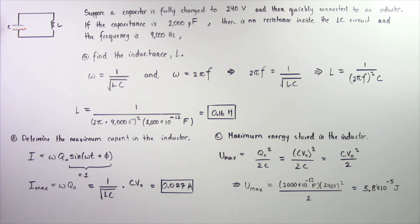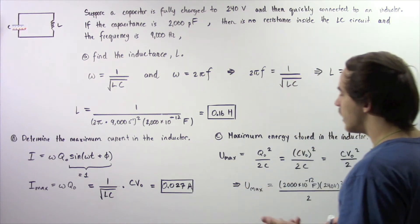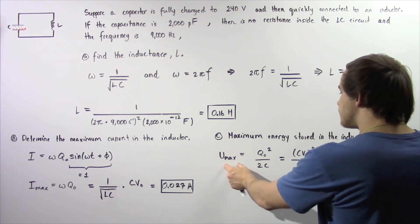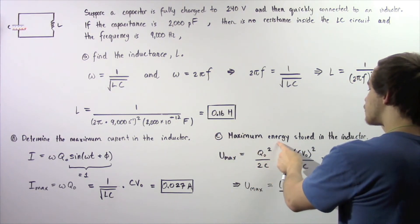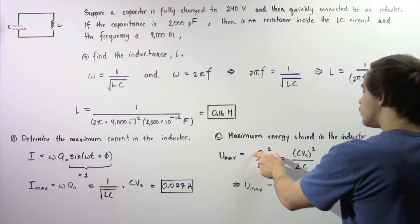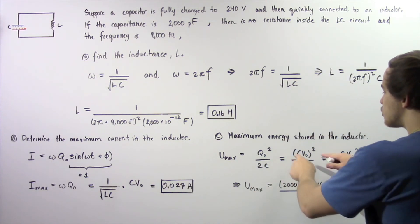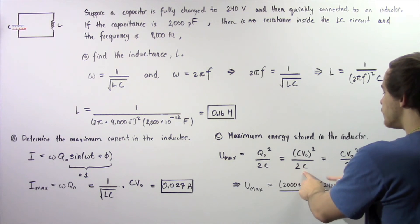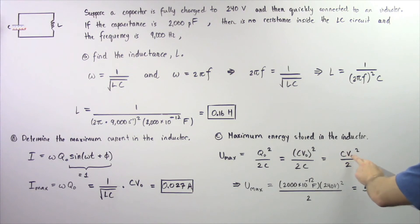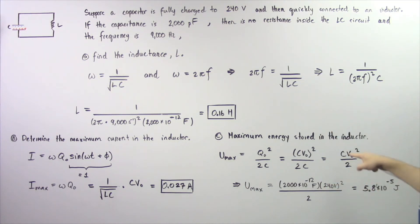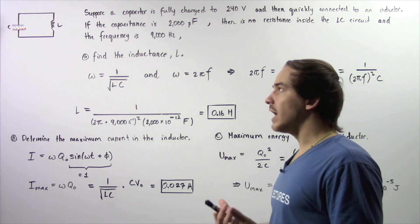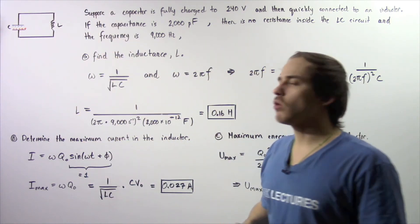Finally, let's move on to part C: find the maximum energy stored in the inductor. The maximum energy in the inductor is equal to Q naught squared divided by 2 times C. Since Q naught equals C times V naught, we square this and divide by 2C. One of the C's cancels, giving maximum U equal to C times V naught squared divided by 2. Plugging in 240 volts squared, multiplied by the capacitance, divided by 2, we get about 5.8 times 10 to the negative 5 joules — the maximum energy stored in the magnetic field of the inductor.